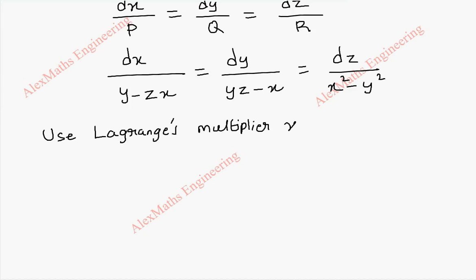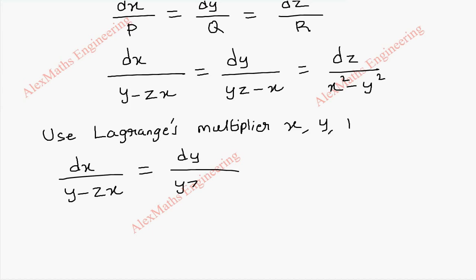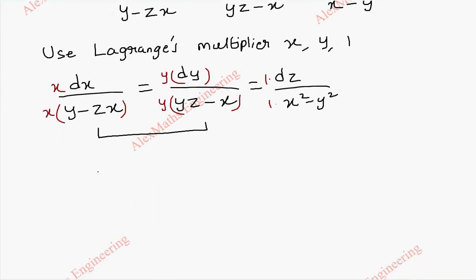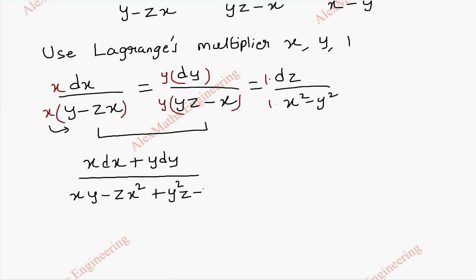For the first part, let's use multipliers x, y, and 1. So we have dx by y minus zx, equal to dy by yz minus x, equal to dz by x square minus y square. We multiply x with both numerator and denominator of the first term, y with both numerator and denominator of the second term, and 1 with the third. Taking these two terms and applying the ratio property by adding the numerators, we get x dx plus y dy in the numerator.